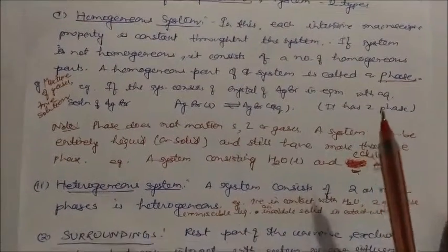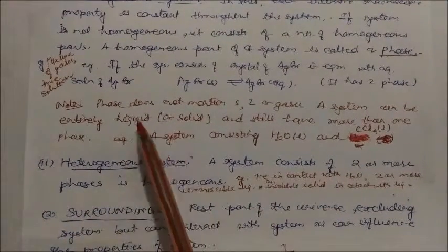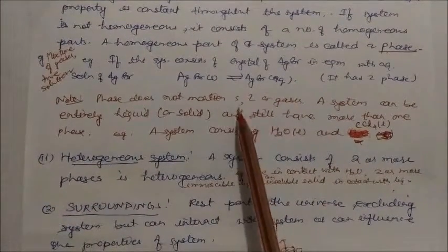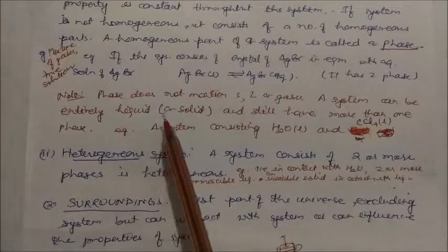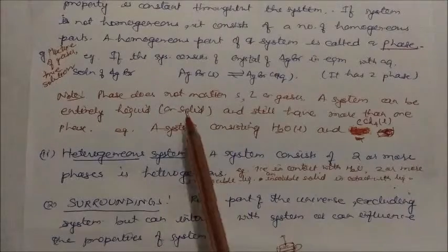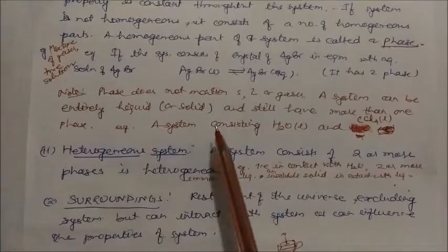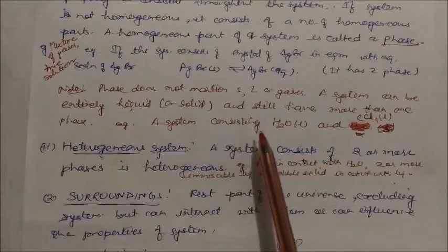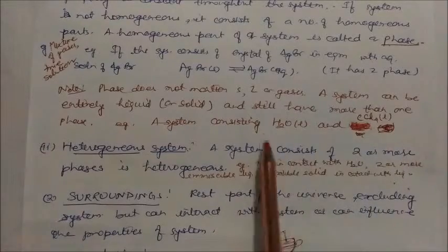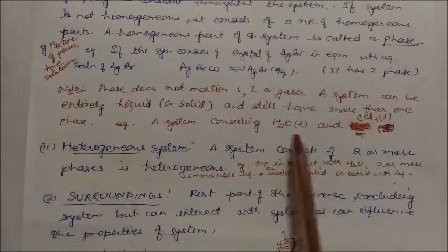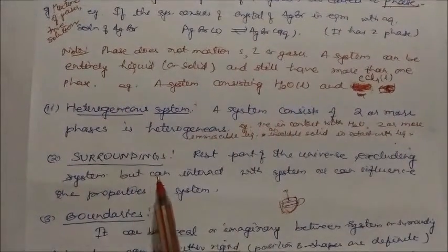One important point: phase does not simply mean solid, liquid, or gas. A system can be entirely liquid and still have more than one phase. For example, water and CCl₄ (carbon tetrachloride) are both liquids, but they form two phases since they are immiscible. This system consisting of two liquid phases is still called a homogeneous system in the sense that each phase is uniformly distributed within itself.